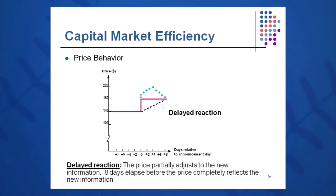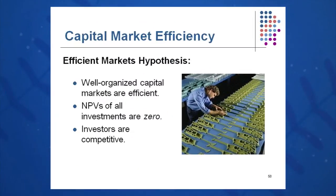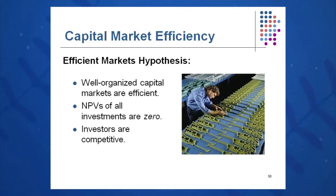In this case, you see eight days elapsed before the price is completely reflected — the new information is completely reflected in the price. Well-organized markets in general are efficient. Investors are competitive and the NPV of all investments is zero. That's an efficient capital market: a market where stock prices and instrument prices react quickly to changes in information.